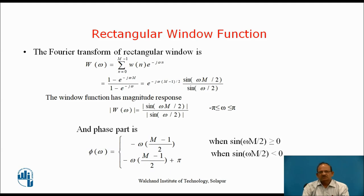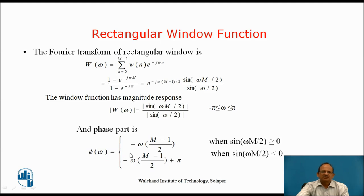As we have seen, the Fourier transform of this rectangular window function is W(omega). If you evaluate this summation, it comes out to be (1 − e^(−j*omega*M)) / (1 − e^(−j*omega)), which gives us e^(−j*omega*(M−1)/2) * sin(omega*M/2) / sin(omega/2). The magnitude of this function is a sinc-like function, with phase equal to −omega*(M−1)/2 when positive, and −omega*(M−1)/2 + π when sin(omega*M/2) is negative.